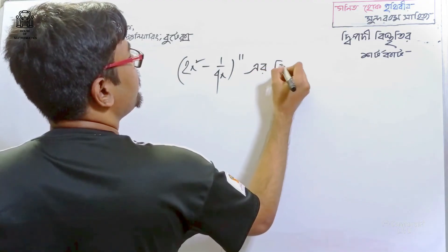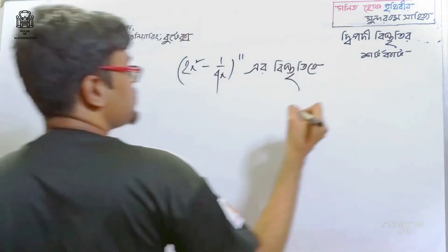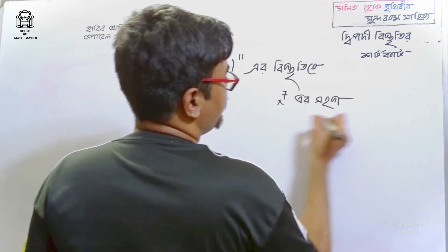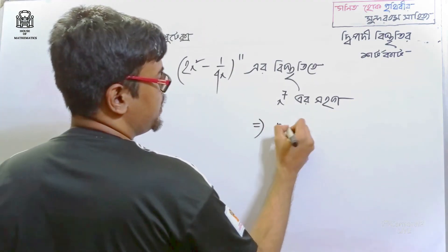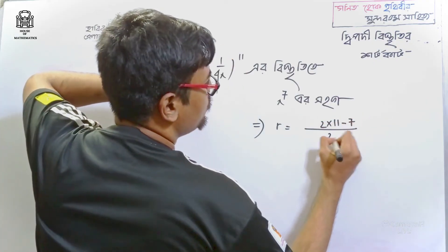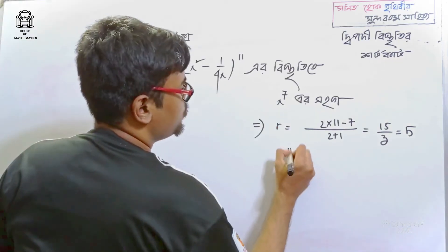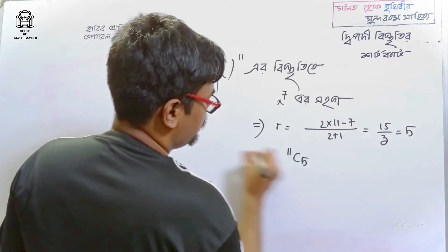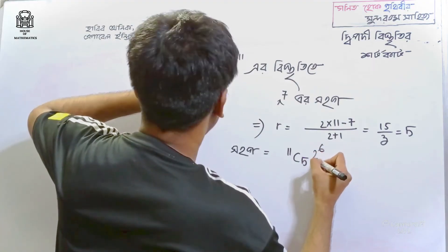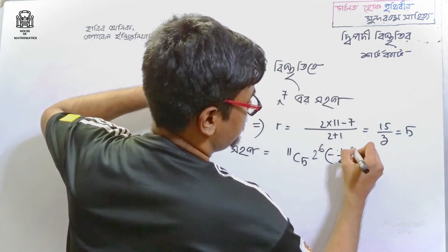11... 11, 23... x to the power 7 is equal to 2 into 11 minus 7, which is 2 plus 1. This is the 6th term. 2 to the power of 6, minus 1 by 4 to the power 5. What is the answer? Please comment.